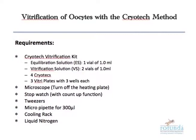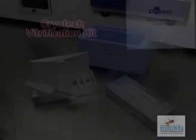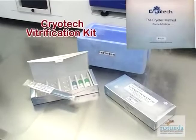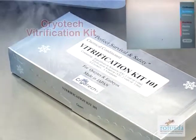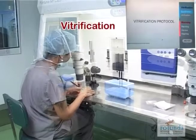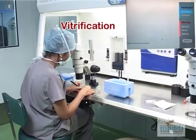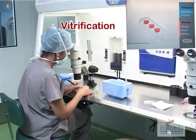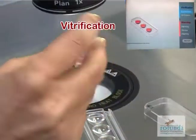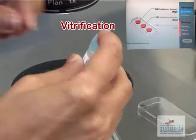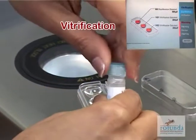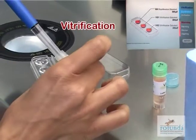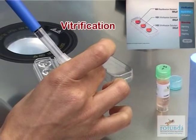Bring Equilibration Solution (ES) and Vitrification Solution (VS) vials to room temperature at least one hour before vitrification. Write ES, VS1, and VS2 on the lid of the vitriplate. Fill the wells of the vitriplate with 300 microliters of ES, VS1, and VS2 respectively.